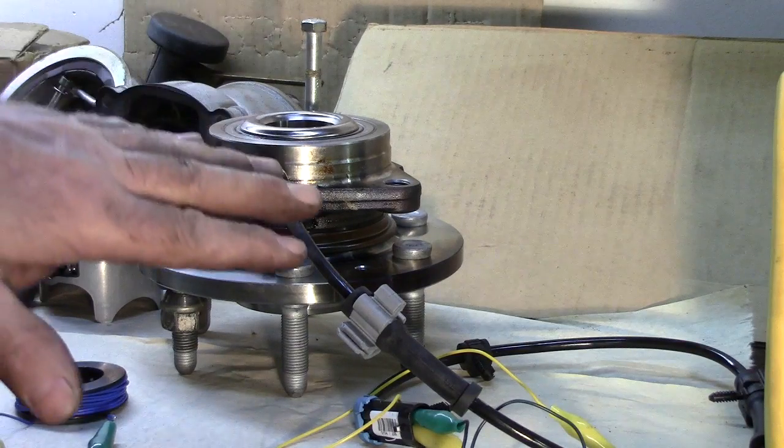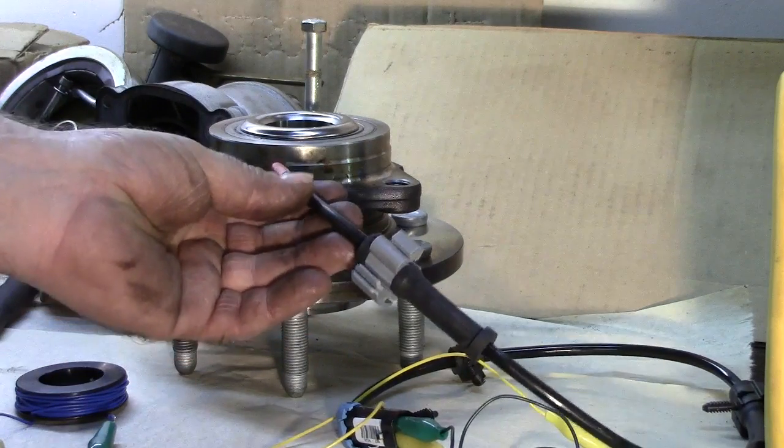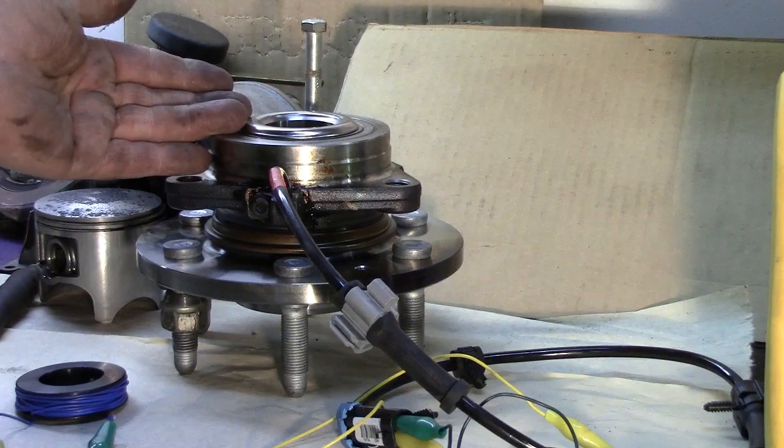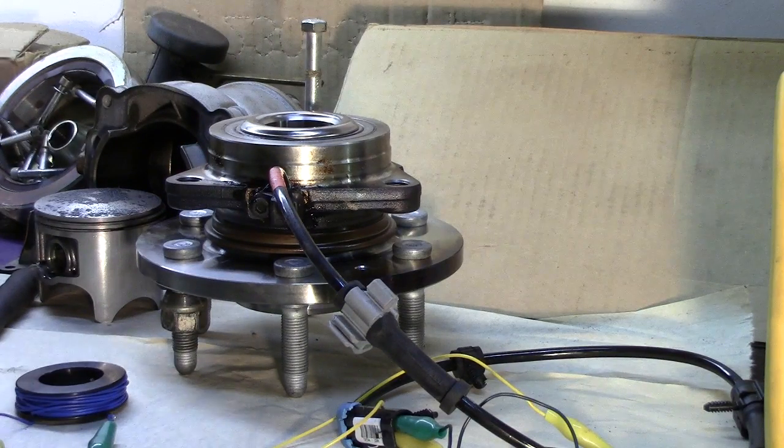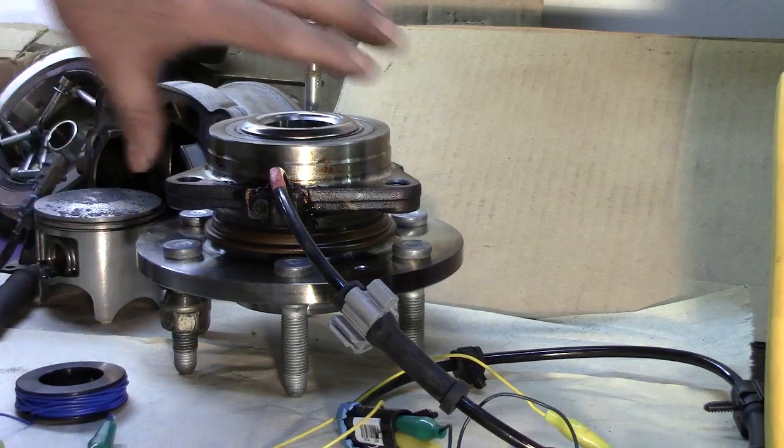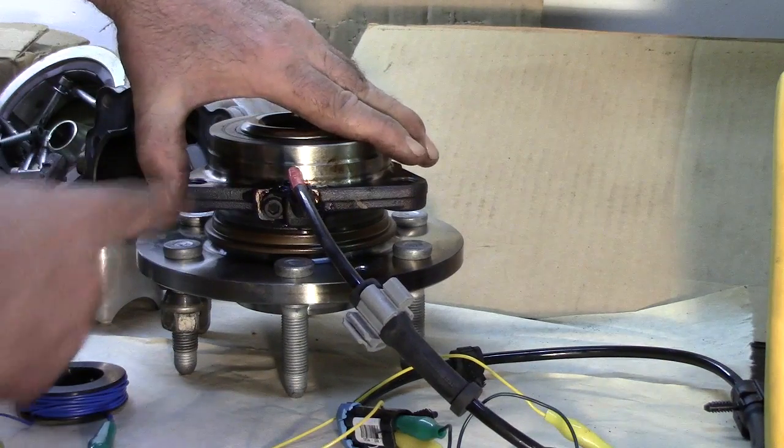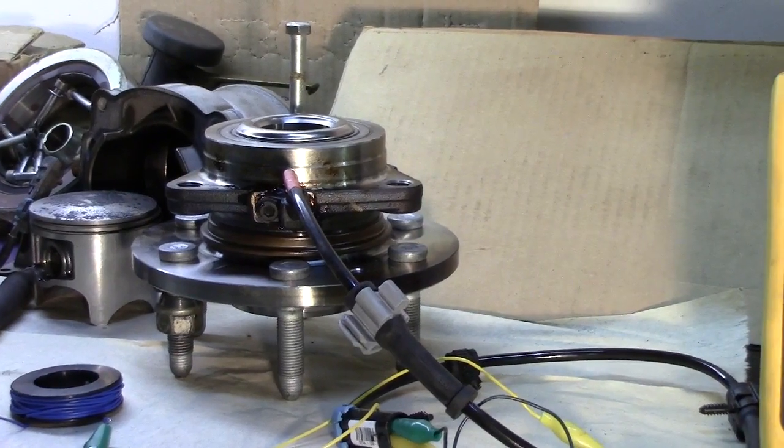With that, we could also buy the wheel speed sensor separate from the wheel bearing assembly. Where's the problem happening on these? It has to do with the mating surfaces between the wheel speed sensor and the mounting surface of it. Let's take a look at one over here, and I'll show you what happens to them.